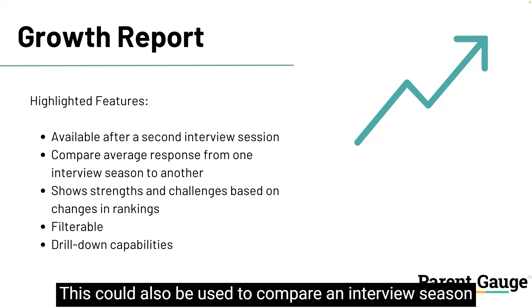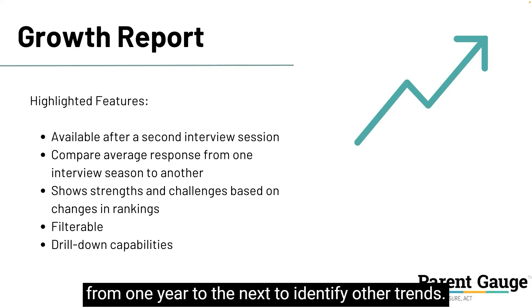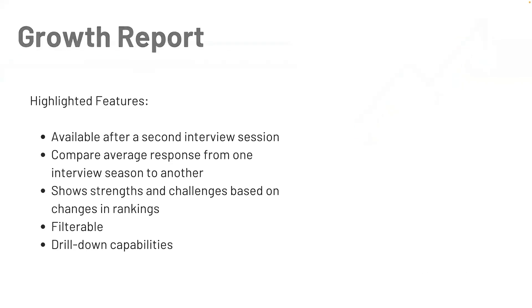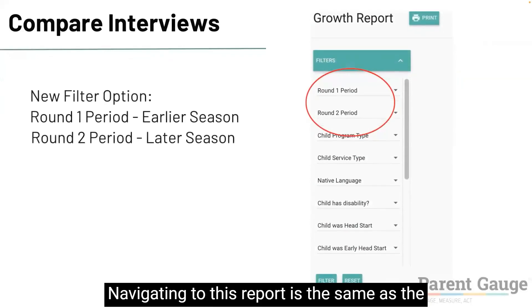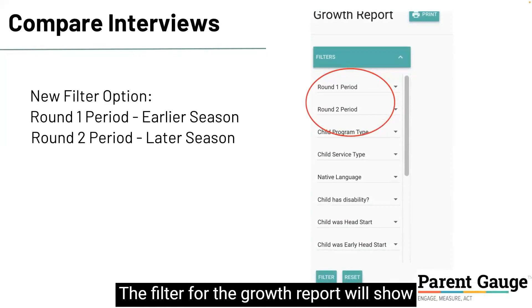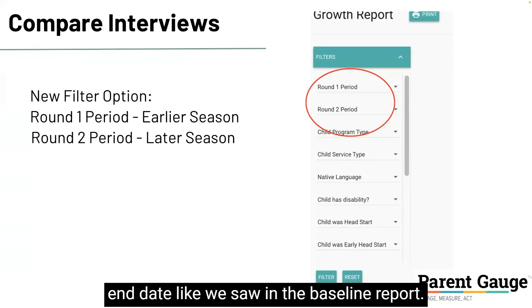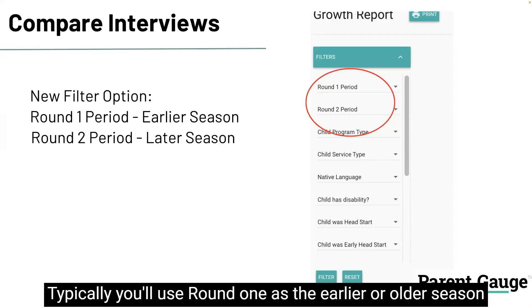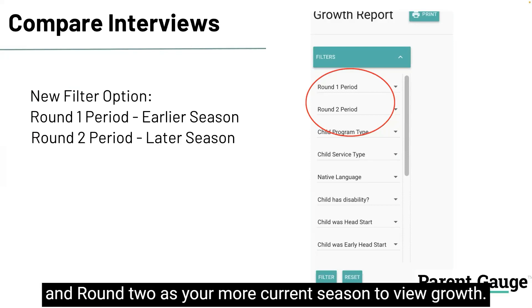This could also be used to compare an interview season from one year to the next to identify other trends. Navigating to this report is the same as the baseline report, but you'll see one key difference in the filter. The filter for the growth report will show two periods of time instead of a start and end date. Typically, you'll use round one as the earlier or older season and round two as your more current season to view growth.